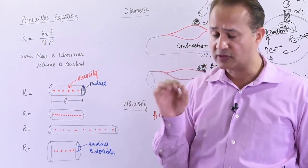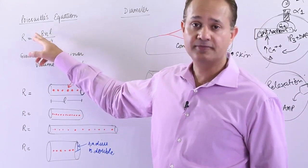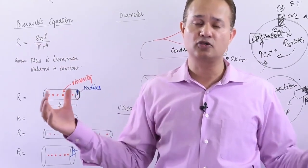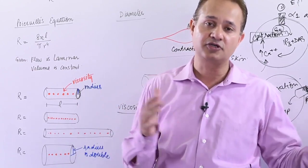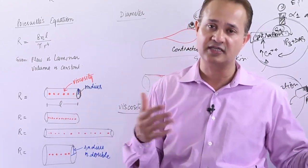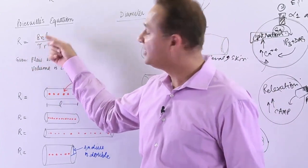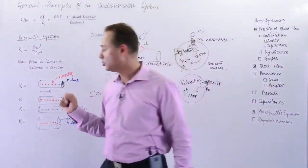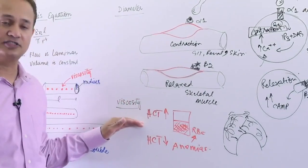Eight is not an important number here. Length is not important for the cardiovascular system because normally our length of the blood vessels do not change in normal conditions. The radius is changing and the viscosity is changing. So let's see how the viscosity is changed.